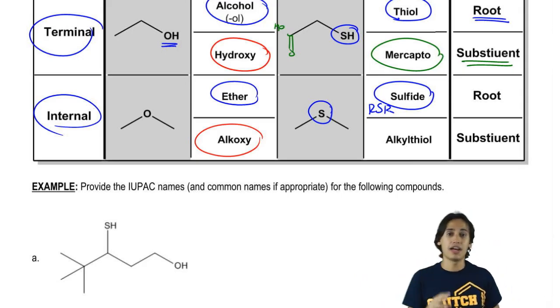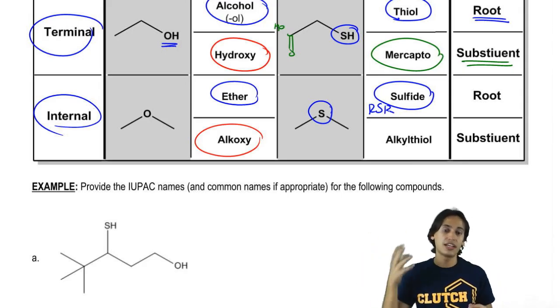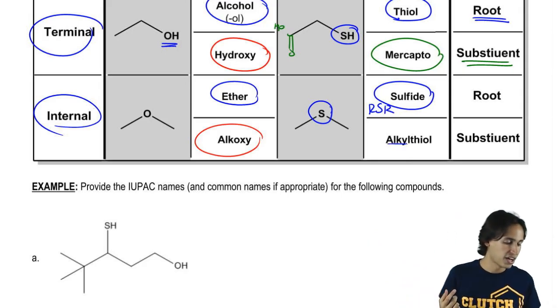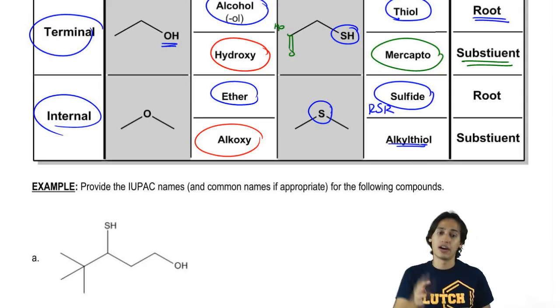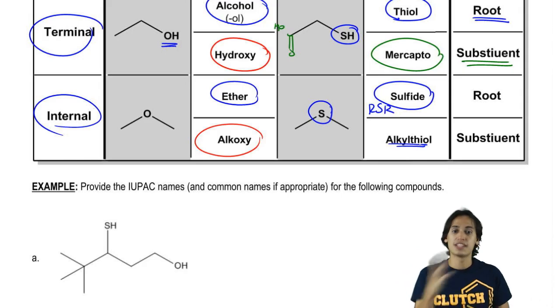But sometimes we don't name it as the common system. Remember that in the common system we just name it as ether or sulfide. But sometimes we're going to use the IUPAC system, and in the IUPAC system we would name it as a substituent. So in that case, we name it as an alkylthiol, which is very similar to alkoxy. Just instead of oxy, it's thiol.